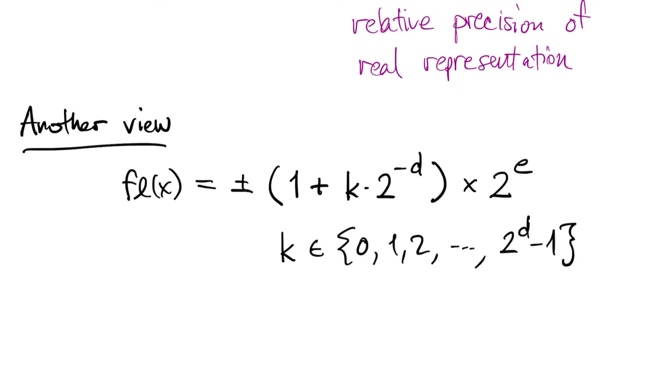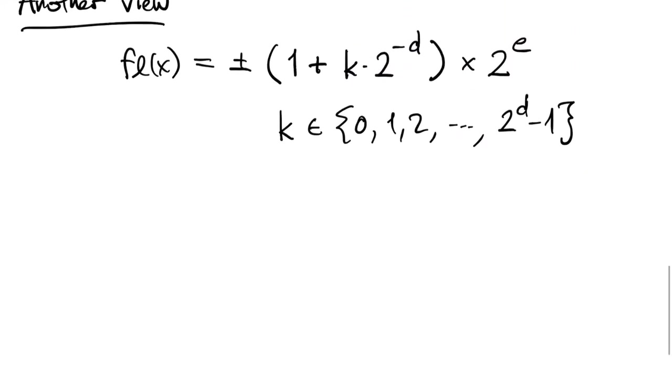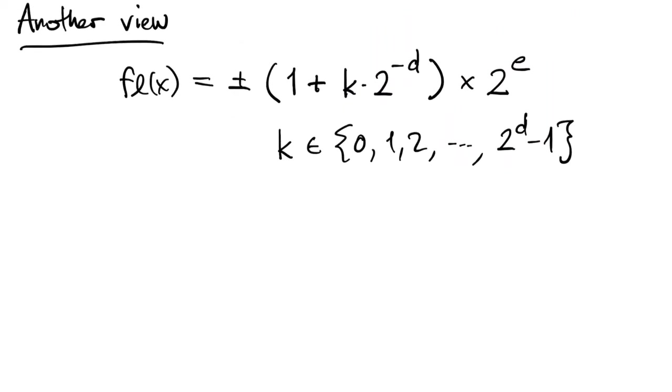So, this 1 plus k times 2 to the minus d, that's just our original set of 2 to the d numbers in the interval 1 to 2, with everything being scaled by 2 to the e.